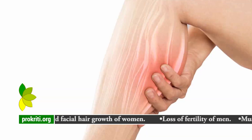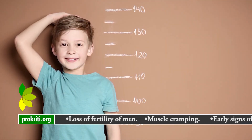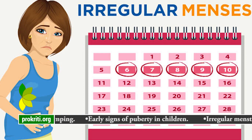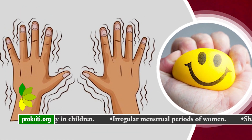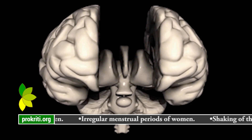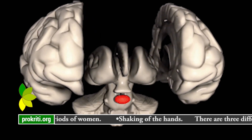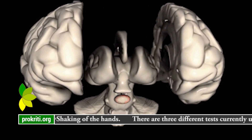Additional symptoms include muscle cramping, early signs of puberty in children, irregular menstrual periods in women, and shaking of the hands. There are three different tests currently used to diagnose adrenal gland diseases.